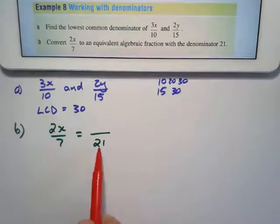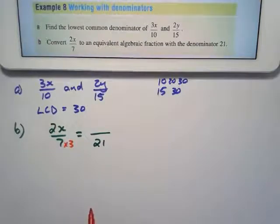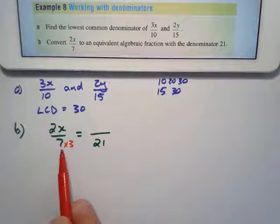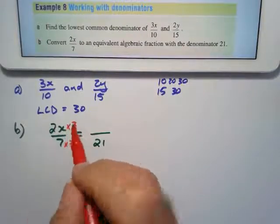What did I do to 7 to get to 21? I had to multiply it by 3. You could also say, what is 21 divided by 7? And the answer would be 3. So I'm going to multiply that by 3.